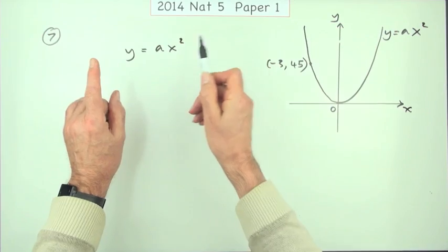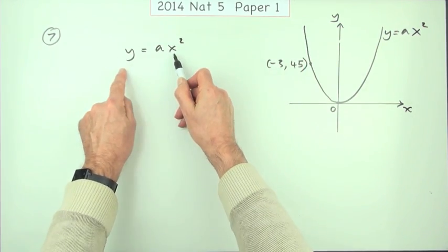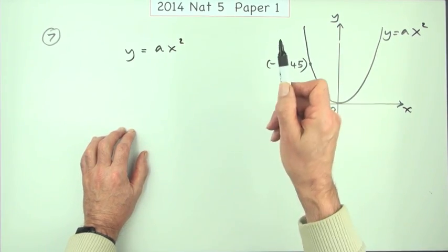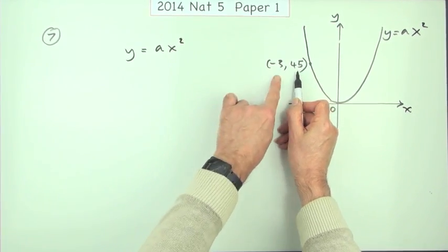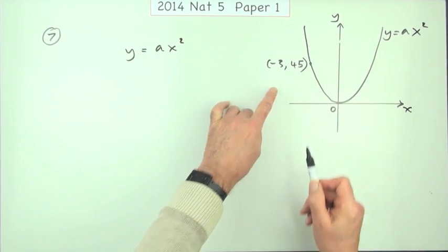If a point, if the coordinates of a point don't fit that equation, they don't lie on that curve. If the coordinates of a point do fit the equation, then they do lie on that curve.